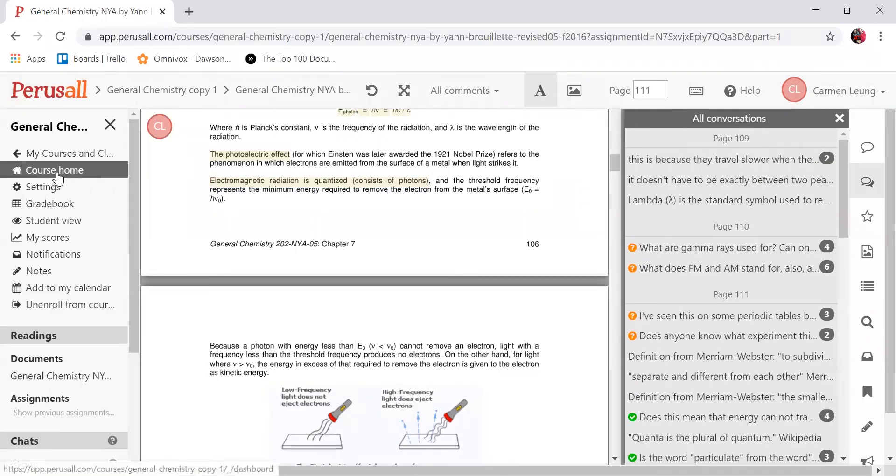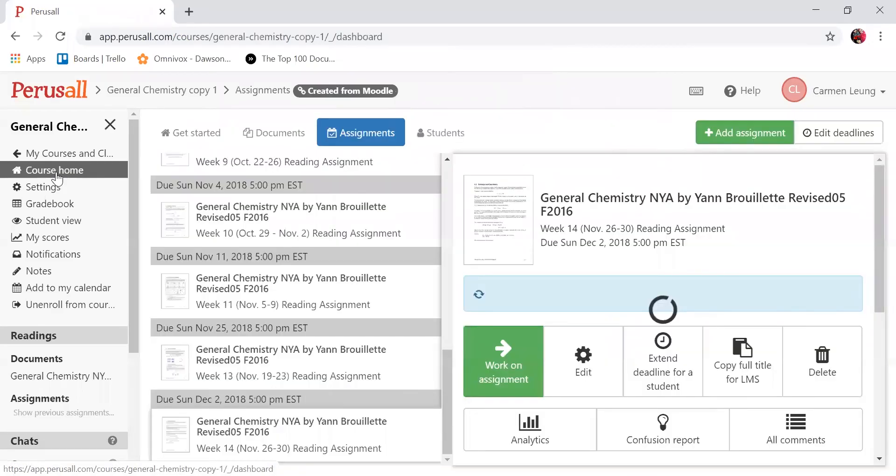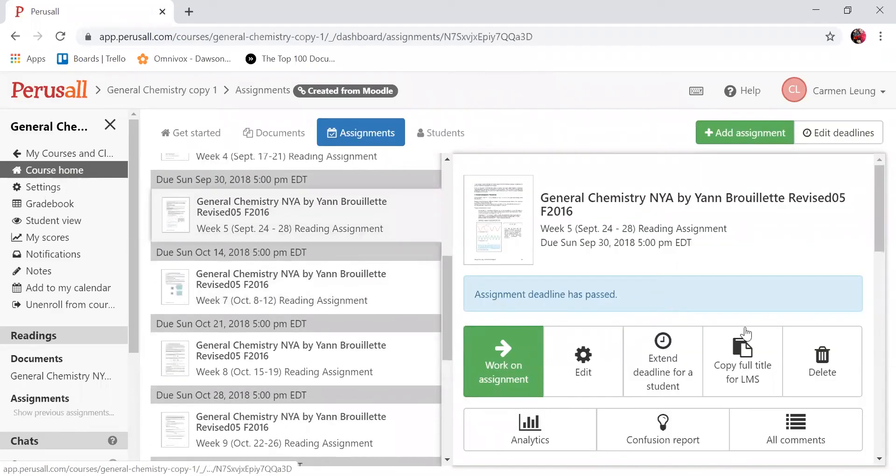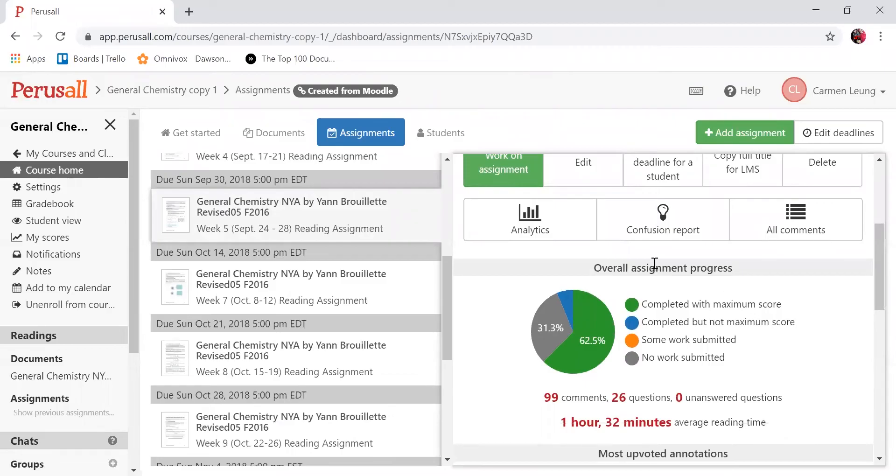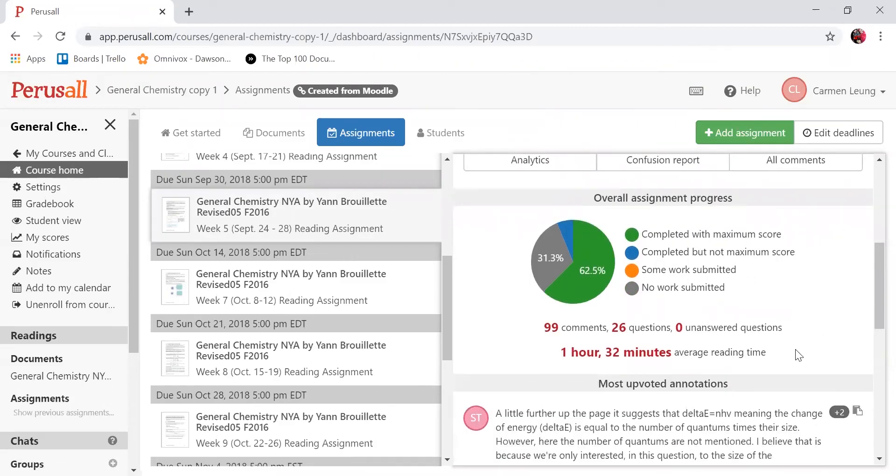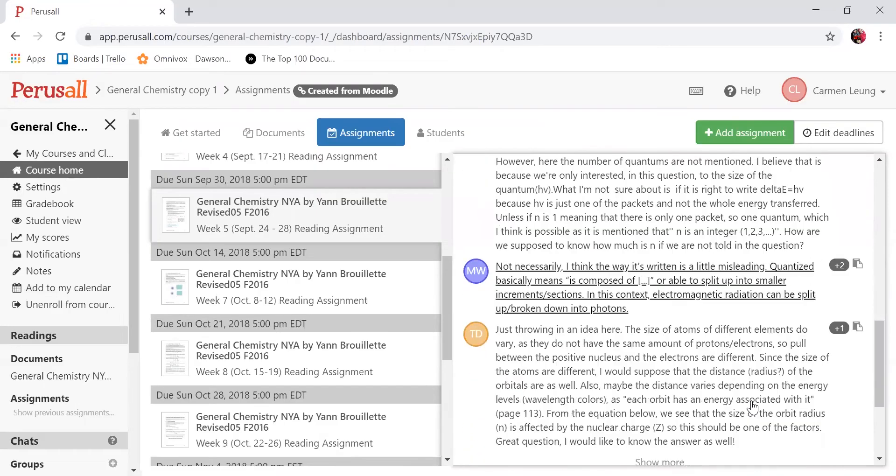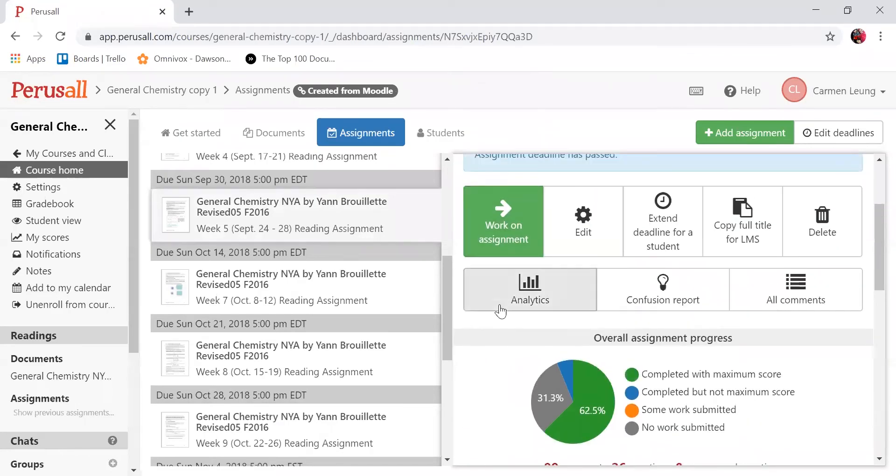If you scroll to the bottom, there is a nice summary that gives you an idea of how many minutes the students spent reading your document, how many comments were added, how many questions were added, and the most upvoted annotations. You can also find analytics and a confusion report.